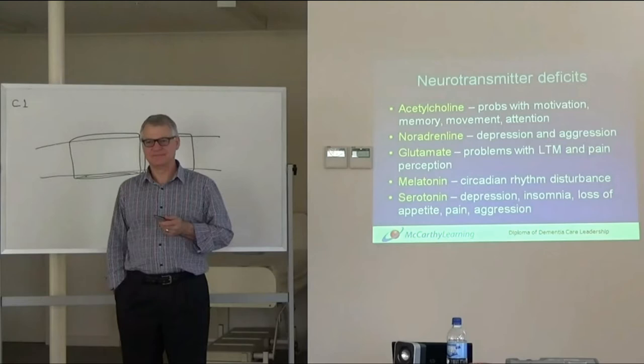They affect acetylcholine indirectly, through affecting other things. The next neurotransmitter is noradrenaline. There are some antidepressants that are noradrenaline reuptake inhibitors called SNRIs, not SSRIs - Selective Noradrenaline Reuptake Inhibitors. Some will try to affect both serotonin and noradrenaline. Glutamate causes problems with long-term memory and pain perception - not enough glutamate means you feel more pain.